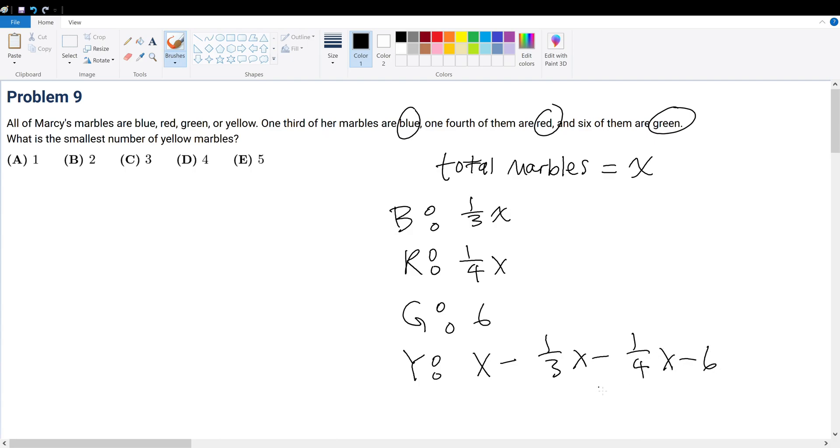This obviously has to turn into a whole number. So what is this term? Well, that's two over three X minus one over four X. That's twelve, eight minus three, that's five over twelve X minus six.